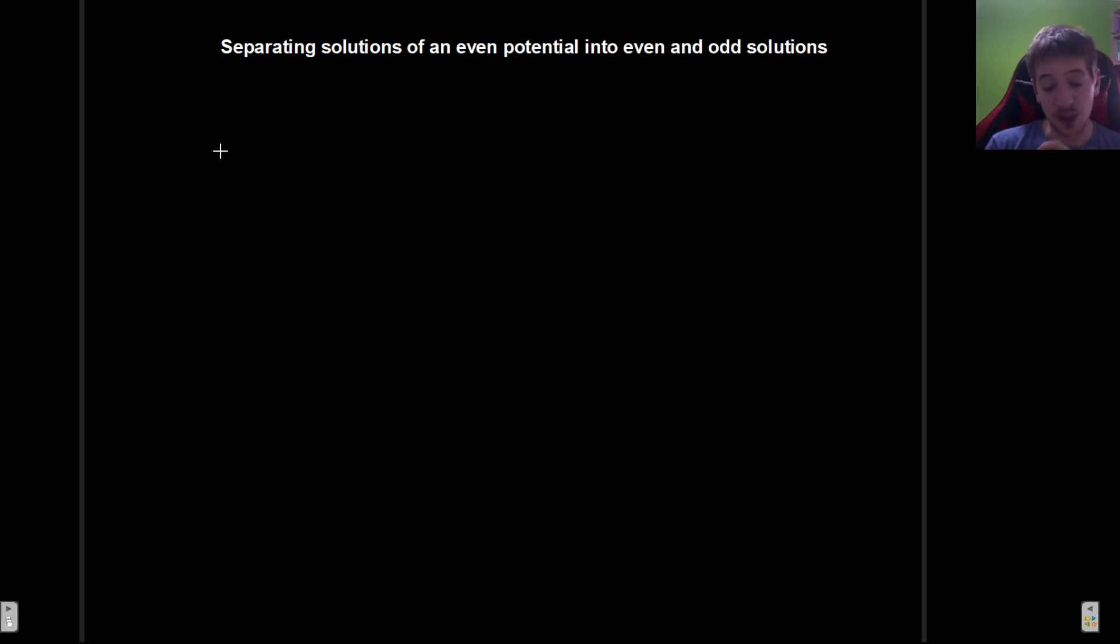This trick is going to be useful whenever you encounter a potential that is even. In fact, the example that we'll see in the next video will be much easier if you use this trick. So what this says and what we're going to show is that if we have an even potential, remember what does this mean? Even just means that if we have some potential that depends on x, then V of minus x is going to be the same as V of x. That is just what even means. So what this says is that if we have a potential that is even, then we can take the solutions as the sum of even and odd solutions. Because remember, the most general solution is always going to be just the sum of all of the possible solutions, the linear combination. That is what we're going to prove now.